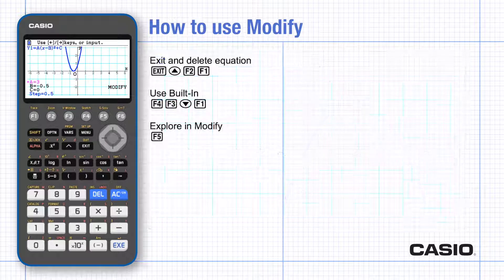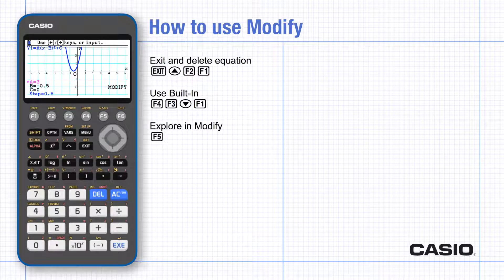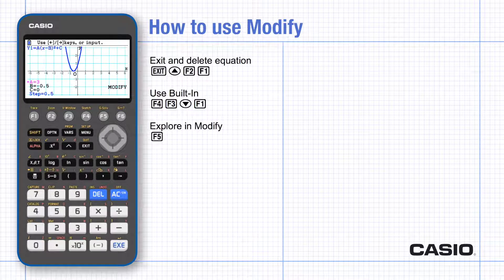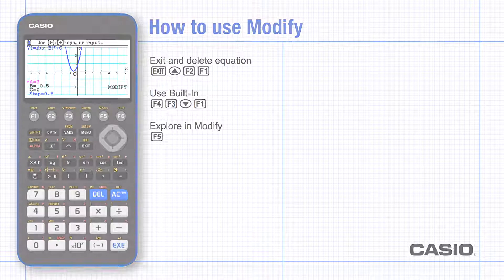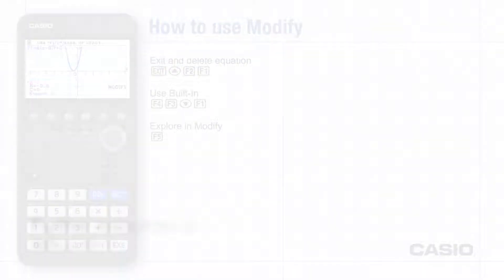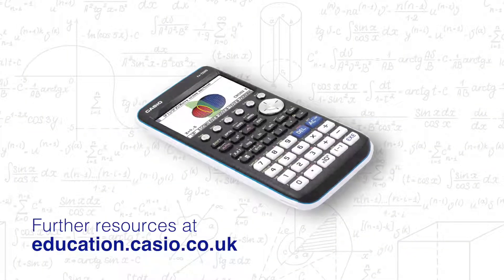In graph mode you can draw a family plot with several values for the constant shown together. You can find out more information about this on the handout that accompanies this video. You can find it and many other resources at education.casio.co.uk.